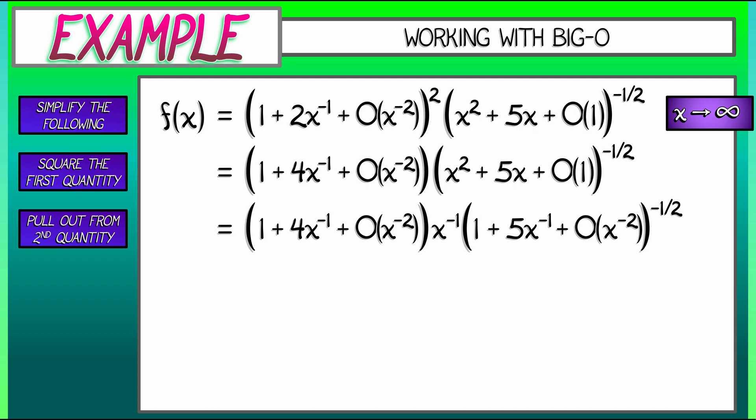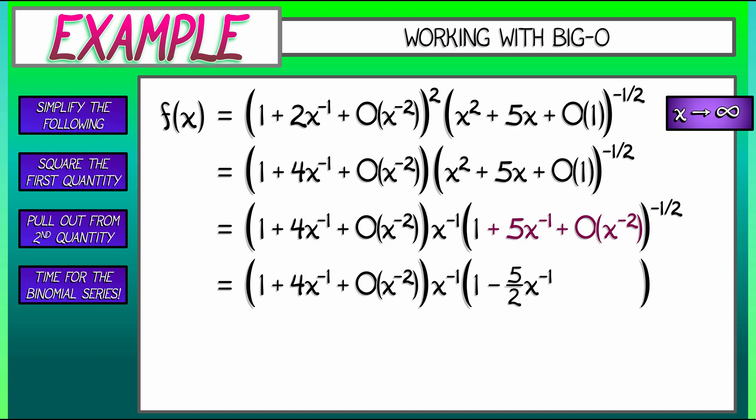Now, why did I do that? Oh, that's right. Now it's in the correct form for using the binomial series. I've got 1 plus some stuff that is going to 0 in the limit. And that stuff is 5x to the minus 1 plus Big-O of x to the minus 2. So carrying everything we had before, applying the binomial theorem, what this second term expands out to is 1, and then the power, negative one-half times 5x to the minus 1, that's negative five-halves x to the minus 1. All the other terms are in Big-O of x to the minus 2.